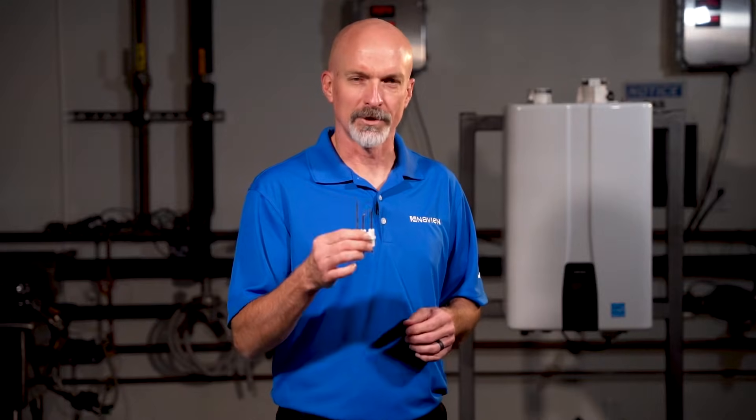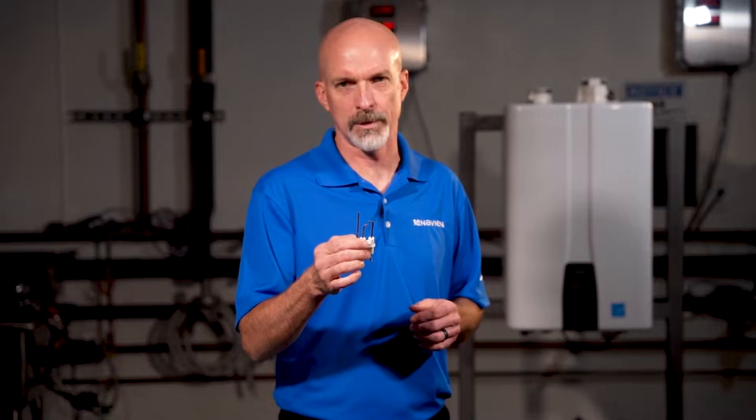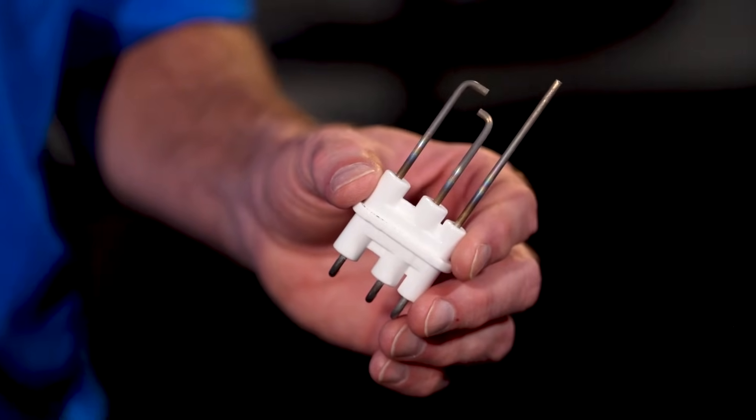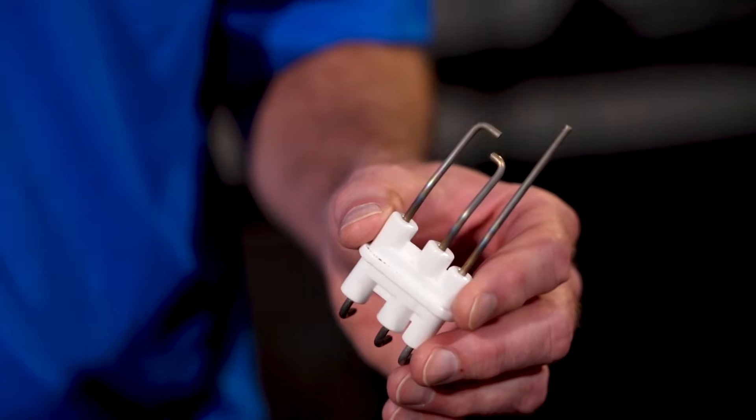The flame sensor is another component we rely on to keep the unit safe. The flame sensor inserts into the burner chamber; it monitors when the burner lights and stays continuously lit, and if the flame would drop out for some reason, it will shut the gas valve down, stopping any operation of the unit.